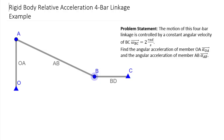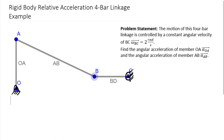Relative acceleration basically builds upon relative velocity. This is a four-bar linkage and we're going to be relating the acceleration at point A over the acceleration of point B, using the same overall system that we did in the previous relative velocity problem. Point C is in fixed axis rotation, point O is in fixed axis rotation, so point A moves in a circle around point O, and point B moves in a circle around point C.